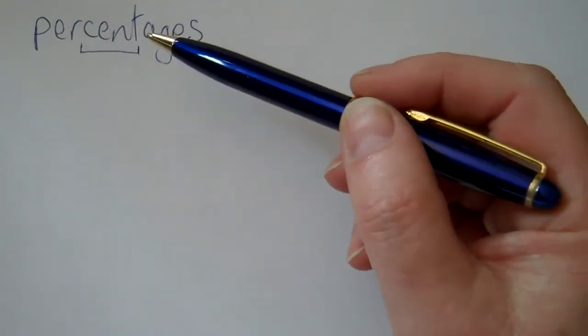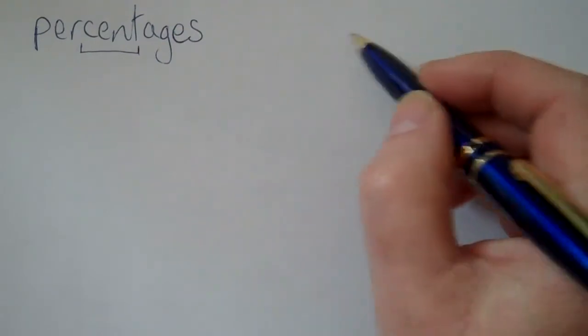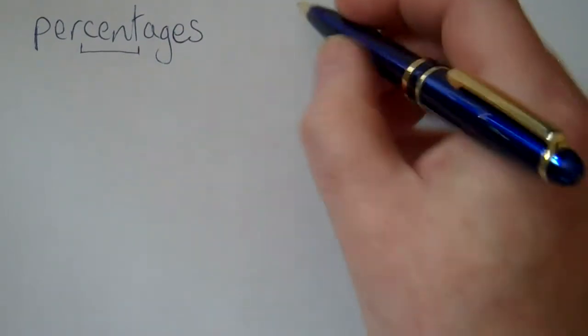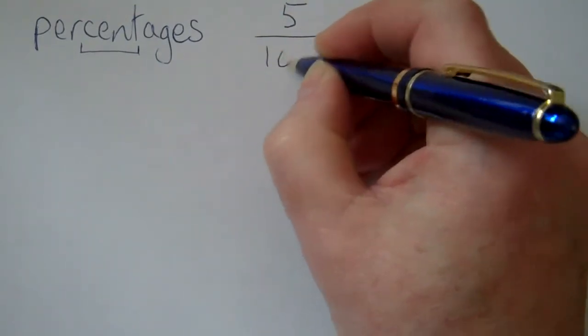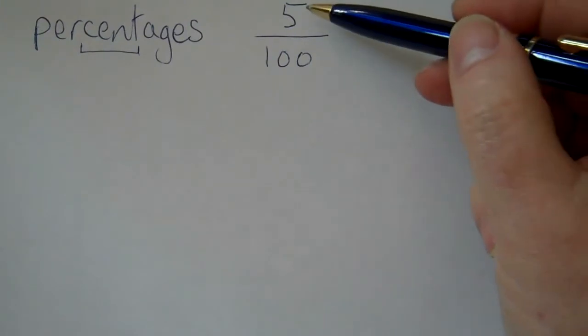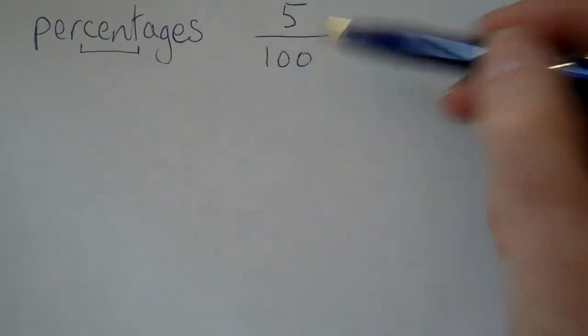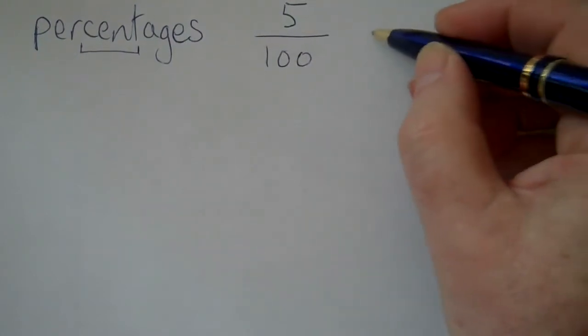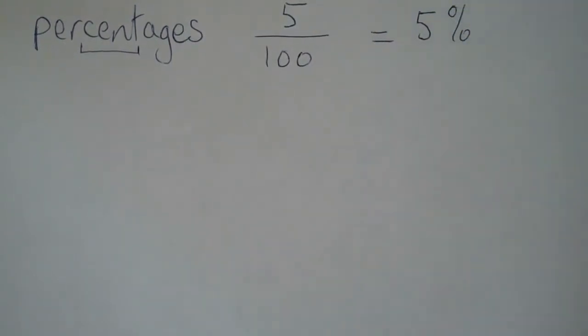A percentage is in fact the same thing as a fraction where the bottom number, the denominator, is a hundred. So for example, five over a hundred or five out of a hundred can be directly turned into a percentage because the bottom number here is a hundred. Five out of a hundred can be written as five followed by this percent sign.